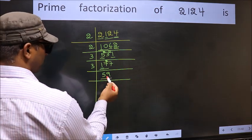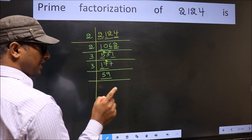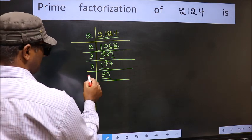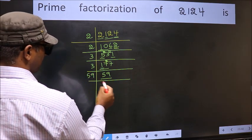Now here we got 59. 59 is a prime number, so 59 times 1 is 59. So we got 1 here.